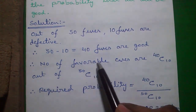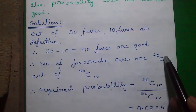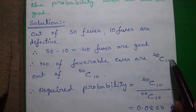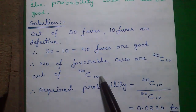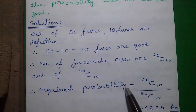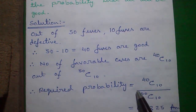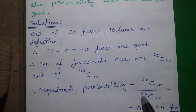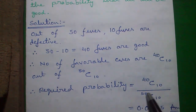The number of favorable cases are 40 combination 10, out of 50 combination 10. So our required probability is favorable cases divided by total cases, which equals 40C10 divided by 50C10.